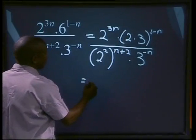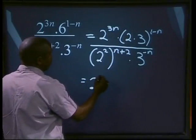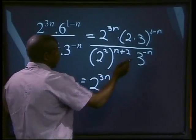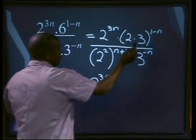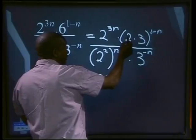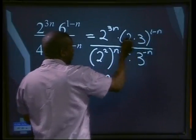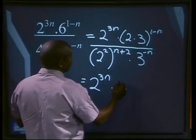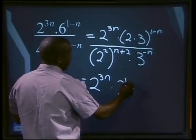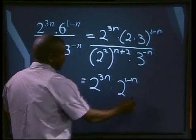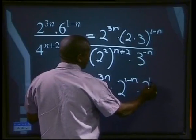Simplify the top, that will give us 2 to the power of 3n. Use our distributive law, that means 1 minus n multiplied by 2 and 1 minus n to 3. That will give us 2 to the power of 1 minus n multiplied by 3 to the power of 1 minus n.